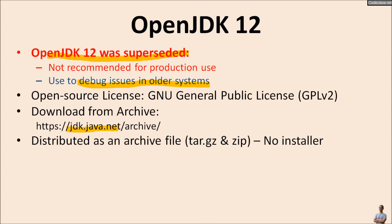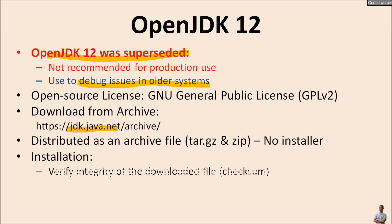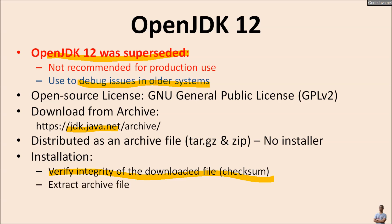OpenJDK 12 is distributed as an archive file with no installer program. After downloading, you need to verify the integrity of the downloaded file by comparing the SHA-256 checksum. Then extract the archive file and update the PATH or JAVA_HOME environment variables.